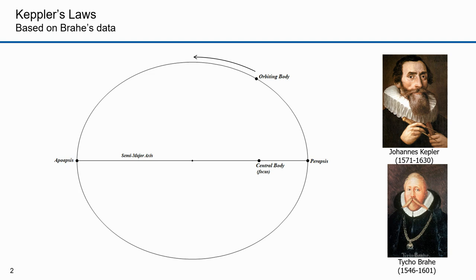Brahe died the following year because of complications from a burst bladder. He was at a banquet where he drank too much, and in those days it was rude to get up from the table, so his bladder burst. Others believe, however, that Brahe may have been poisoned — speculation was that it was Kepler who poisoned him. We'll probably never know.